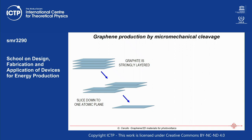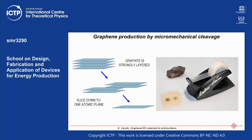The first method of graphene production was micromechanical cleavage: you start from layered graphite and slice it down until you get a single atomic plane. This was performed by Geim and Novoselov. You take a piece of graphite and some scotch tape, and by progressively exfoliating thinner and thinner amounts and depositing it on a substrate, you get down to a single atomic layer.